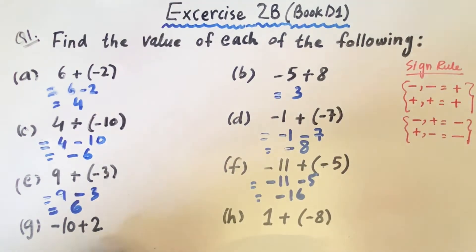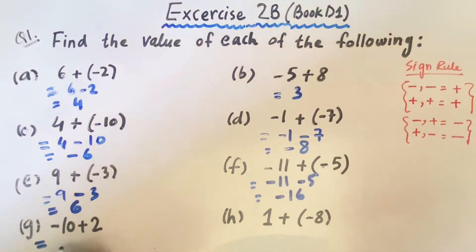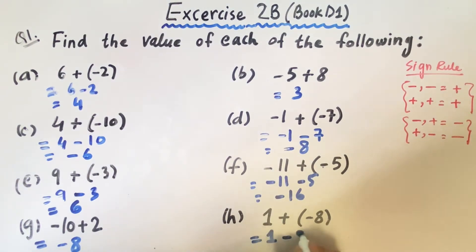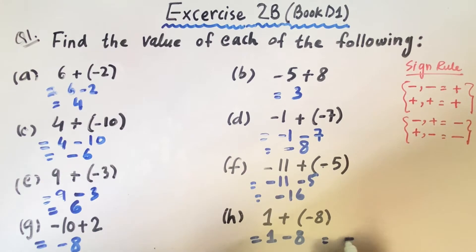In part G, minus plus minus gives a minus sign, and we write 8. Same for part H: 1, plus minus minus 8 — the sign will be minus and the answer will be minus 7. That's it for question 1.